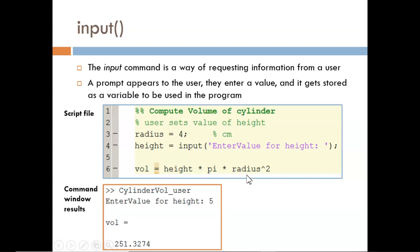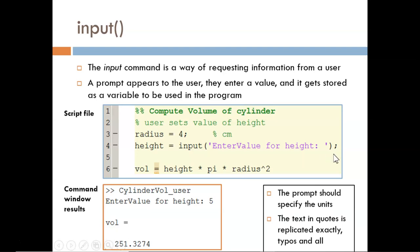Then the script continues and computes the volume. A few things to notice. First, this is a poor prompt because it does not specify the units. Second, the character array within quotes will be replicated in the command window exactly as typed: spaces, letters, typos, and all. Finally, why do we see the result for vol appear in the command window? Because that command was not suppressed with the semicolon.